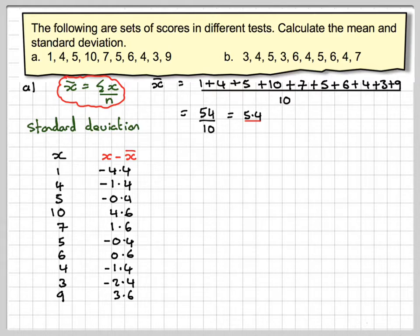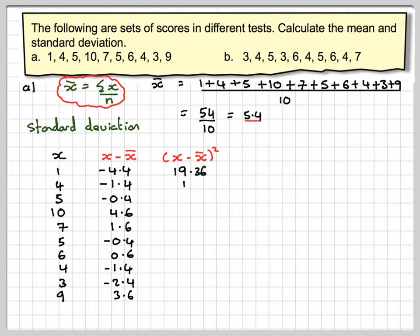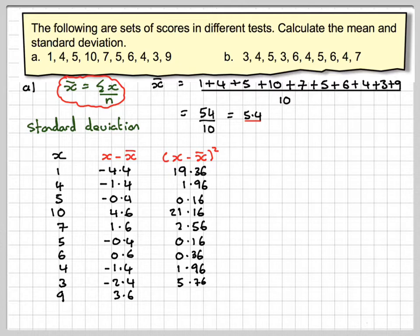The problem here is that if we find the average of these, the negative ones will cancel out the positive ones. So what we need to do to avoid that problem is to square each of these. So squaring each of these numbers, we get these numbers. For example, 3.6 squared is 12.96.